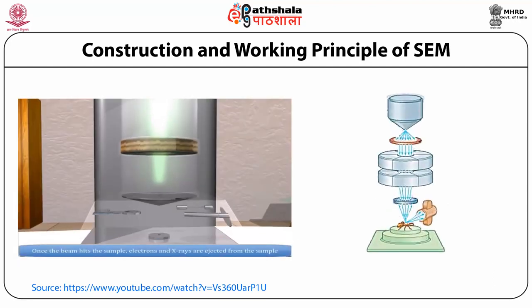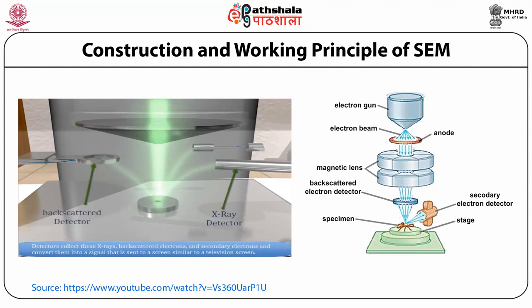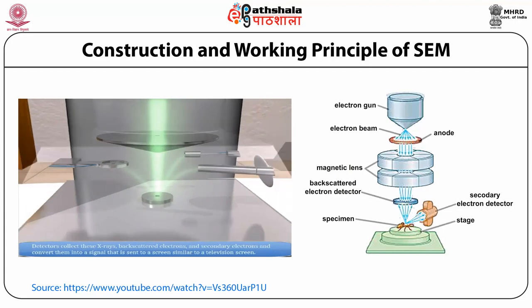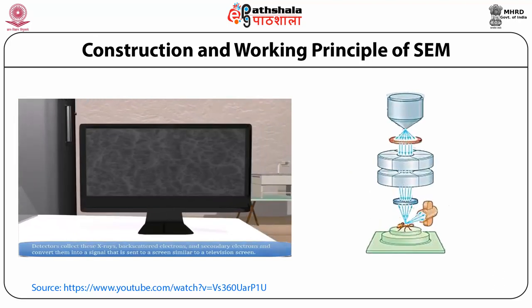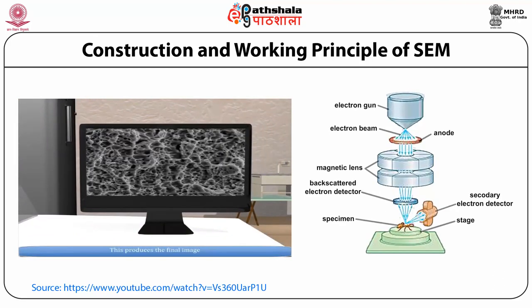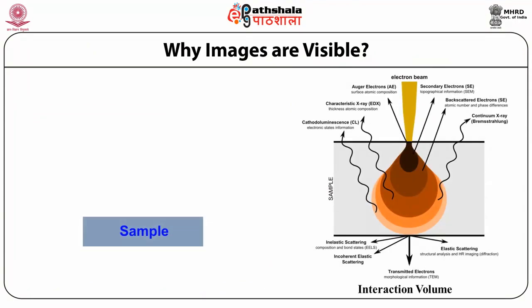Once the beam hits the sample, electrons and X-rays are ejected from the sample. Detectors collect these X-rays, backscattered electrons, and secondary electrons and convert them into signals sent to a screen, similar to a television screen, producing the final image. The SEM is used for cross-sectional analysis of devices like MOSFETs and inspection of integrated circuits.